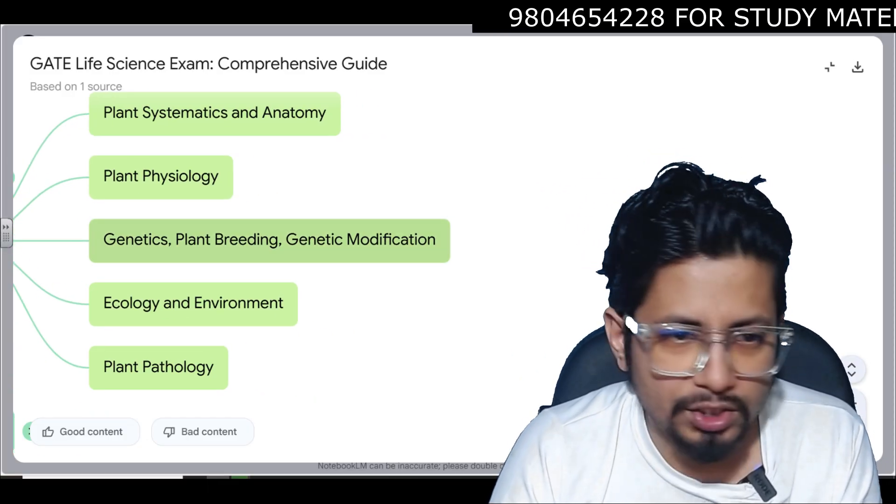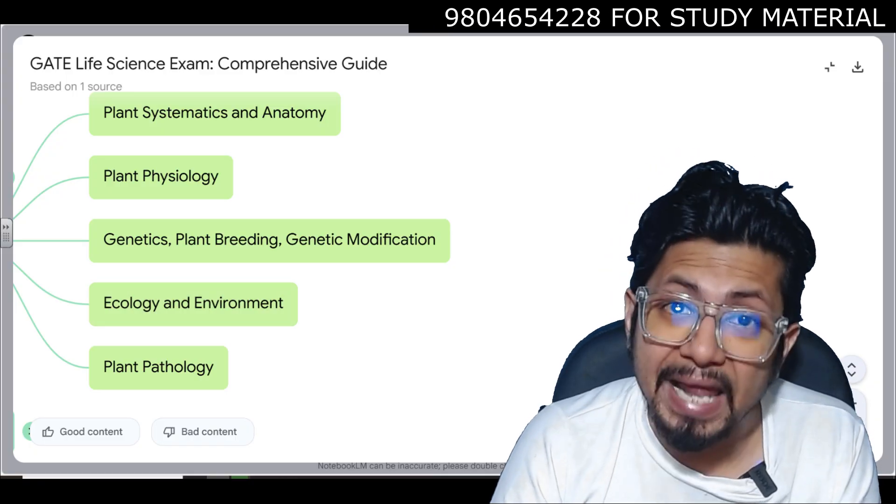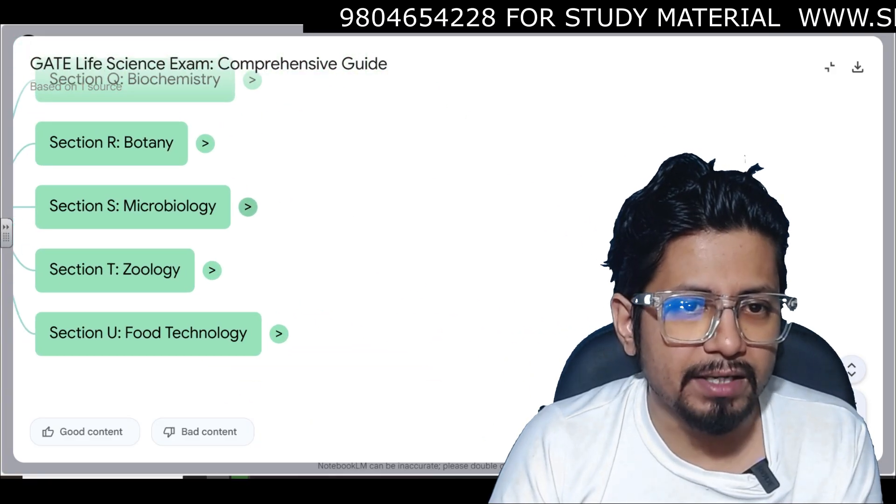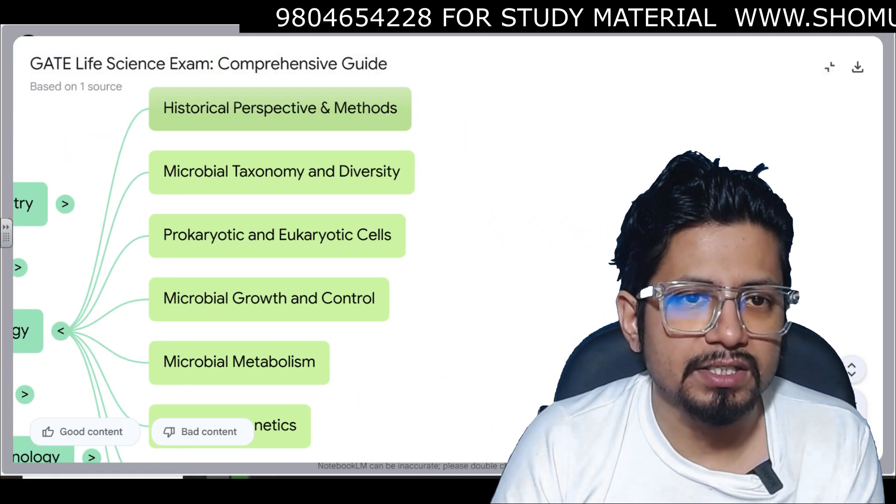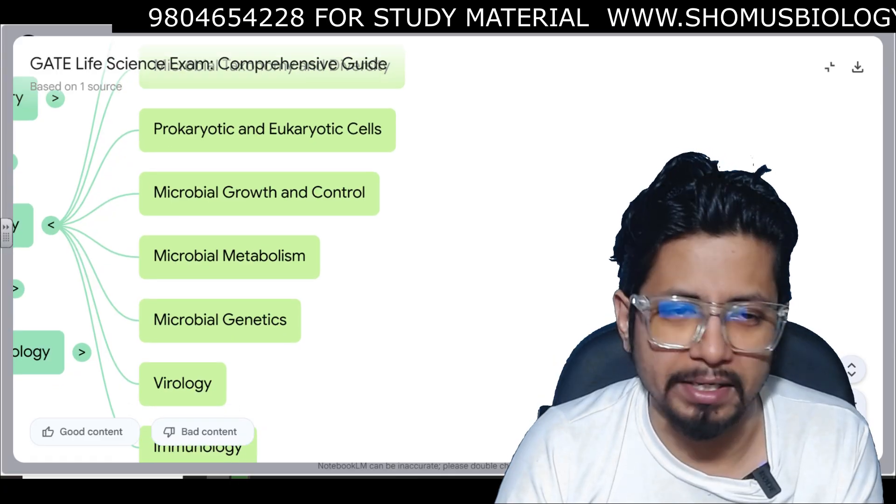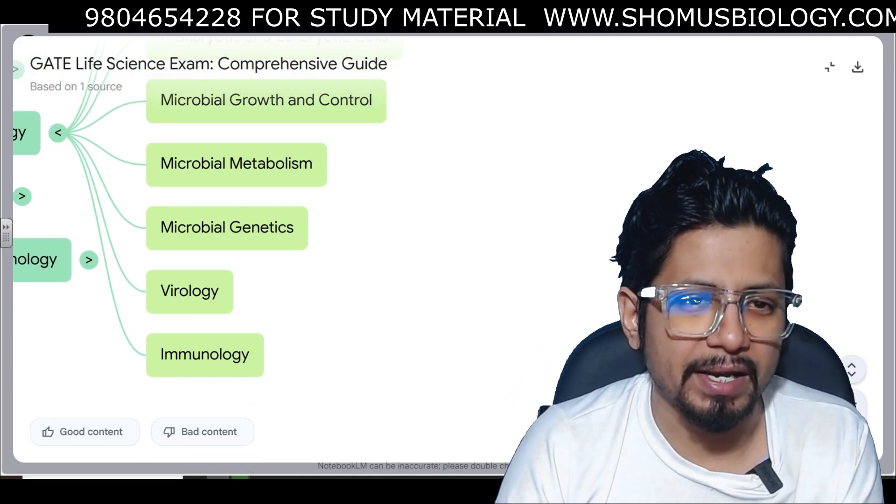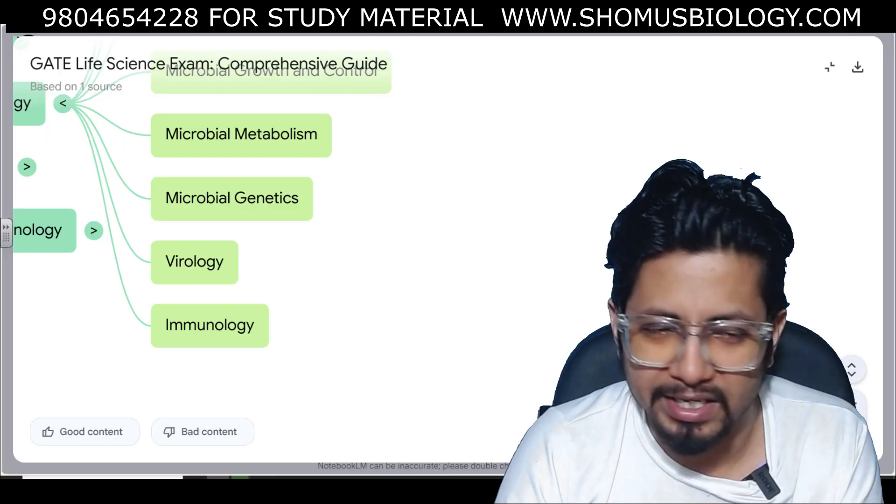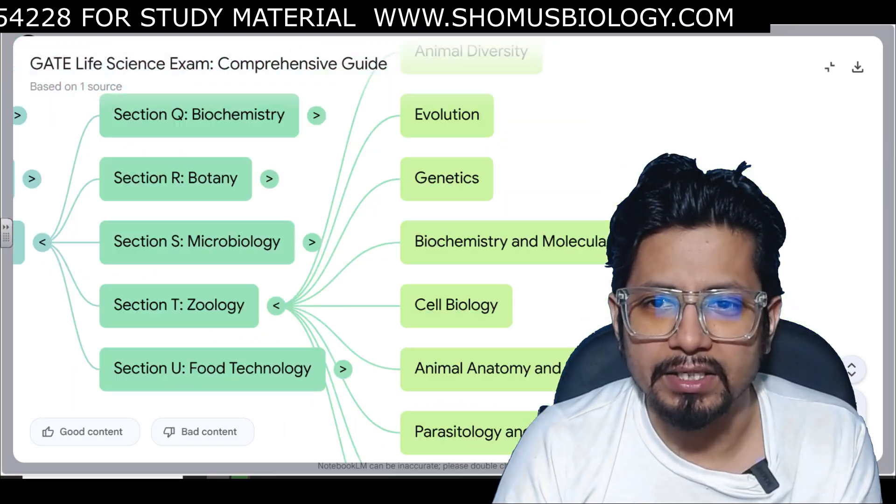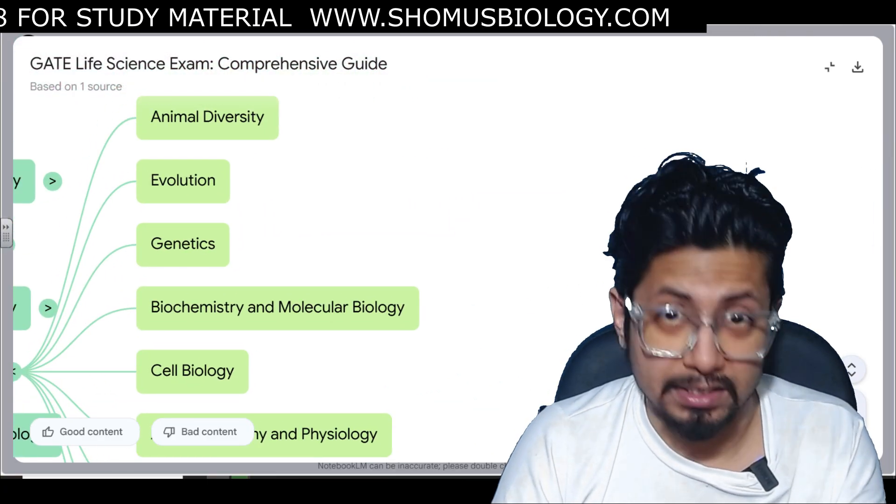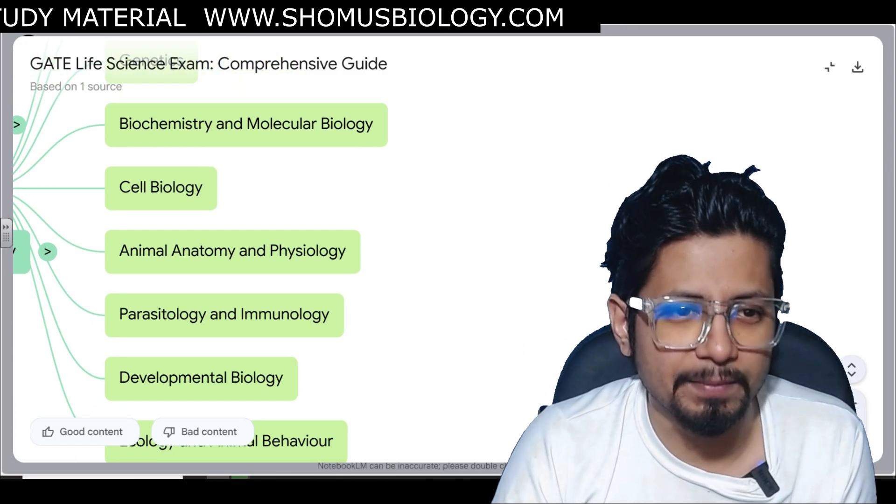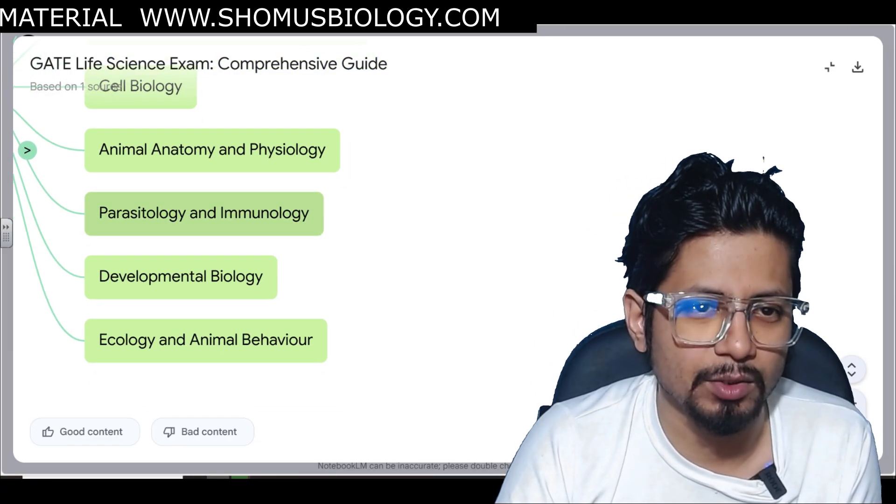In Microbiology section, for Section S, you need to study historical perspectives and methods, microbial taxonomy diversity, prokaryotic and eukaryotic cells, microbial growth and control, microbial metabolism, microbial genetics, virology and immunology. For Section T Zoology, you need to study animal diversity, classification of animals, evolution, genetics, biochemistry and molecular biology, cell biology, animal anatomy and physiology, parasitology and immunology, development biology, ecology and animal behavior.